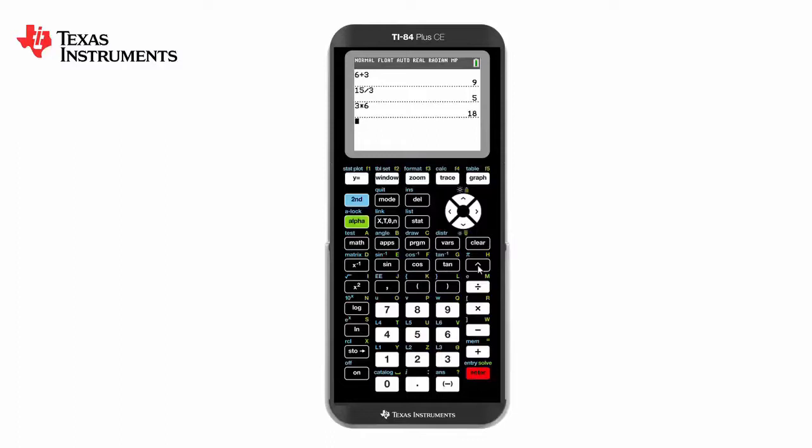If we would like to scroll up and use any of those calculations again, we can simply arrow up using the white arrow, press enter to copy, scroll back into the question and change the numbers. Equally we can scroll up, press enter again, and add to that calculation.